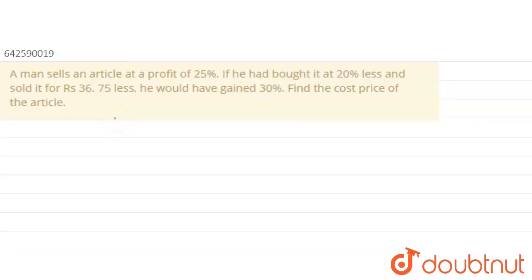So it is given that a man sells an article at a profit of 25%. If he had bought it at 20% less and sold it for Rs. 36.75 less, he would have gained 30%. Find the cost price of the article.